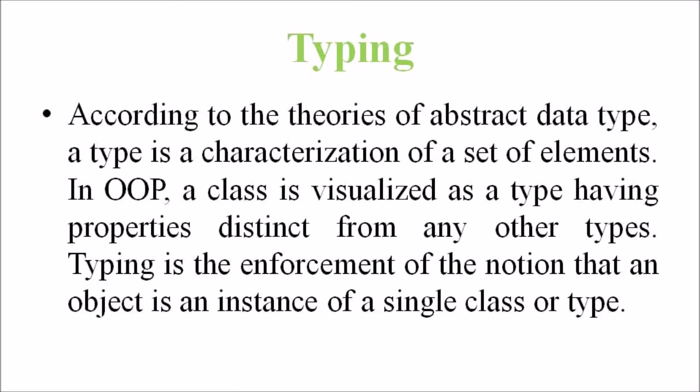The next term to be discussed is typing, which is a minor element. According to the theories of abstract data type, a type is a characterization of a set of elements. In object-oriented programming, a class is visualized as a type having properties distinct from any other types. Typing is the enforcement of the notion that an object is an instance of a single class or type. It also enforces that objects of different types may generally not be interchanged, and can be interchanged only in a very restricted manner if absolutely required.